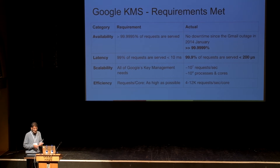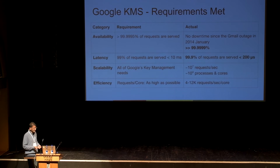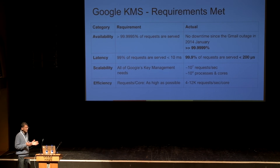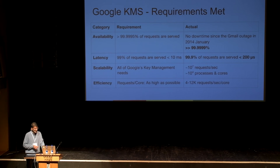On scalability, we serve on the order of tens of millions of requests per second, using on the order of tens of thousands of processes and cores to achieve this. On efficiency, throughput per core — depending on the request mix and processor architecture — we get somewhere between 4,000 and 12,000 requests per second per core. That covers all the performance requirements.